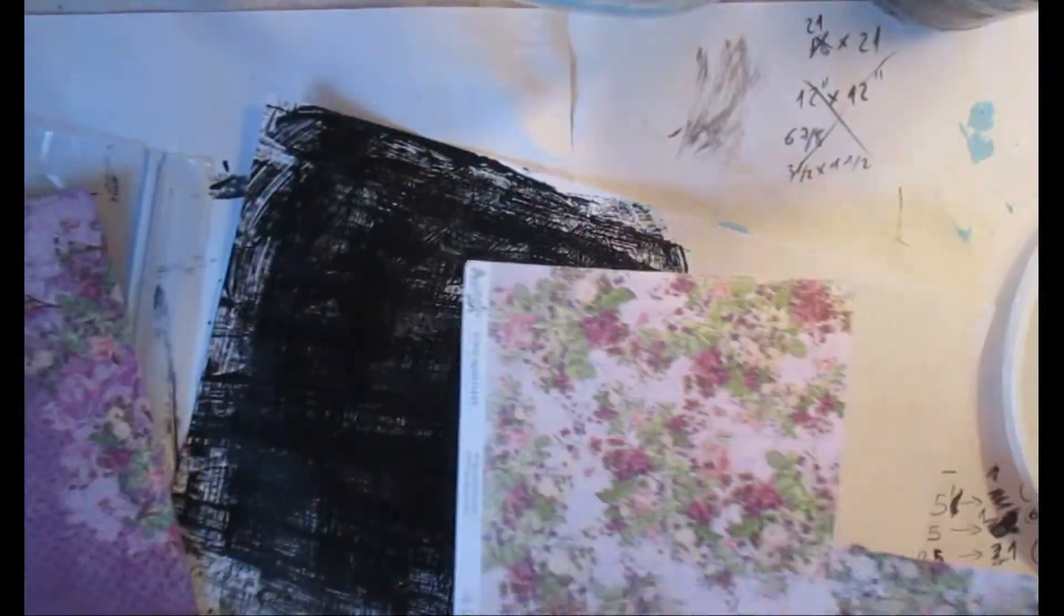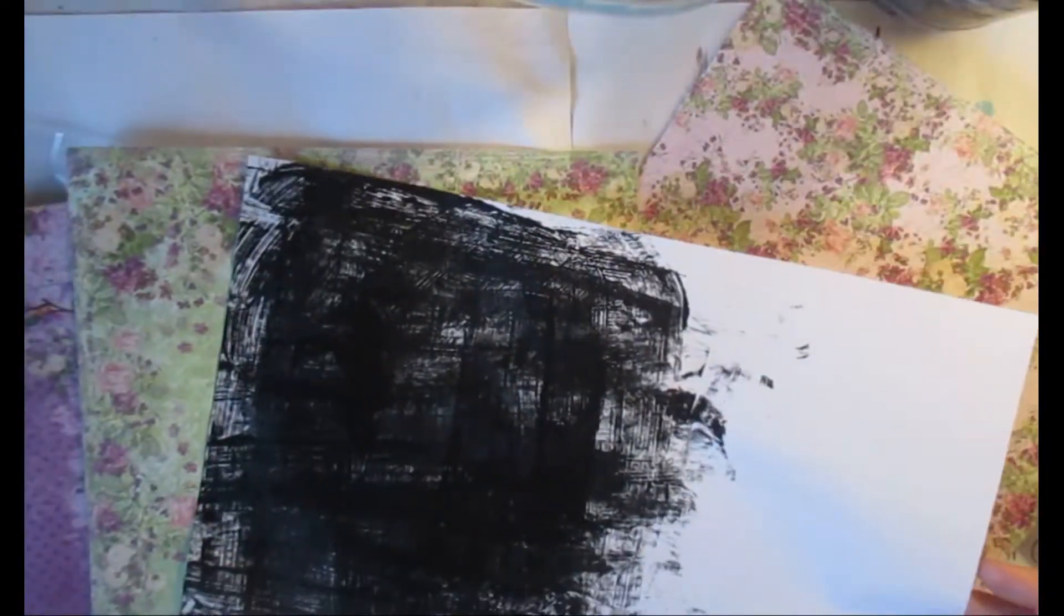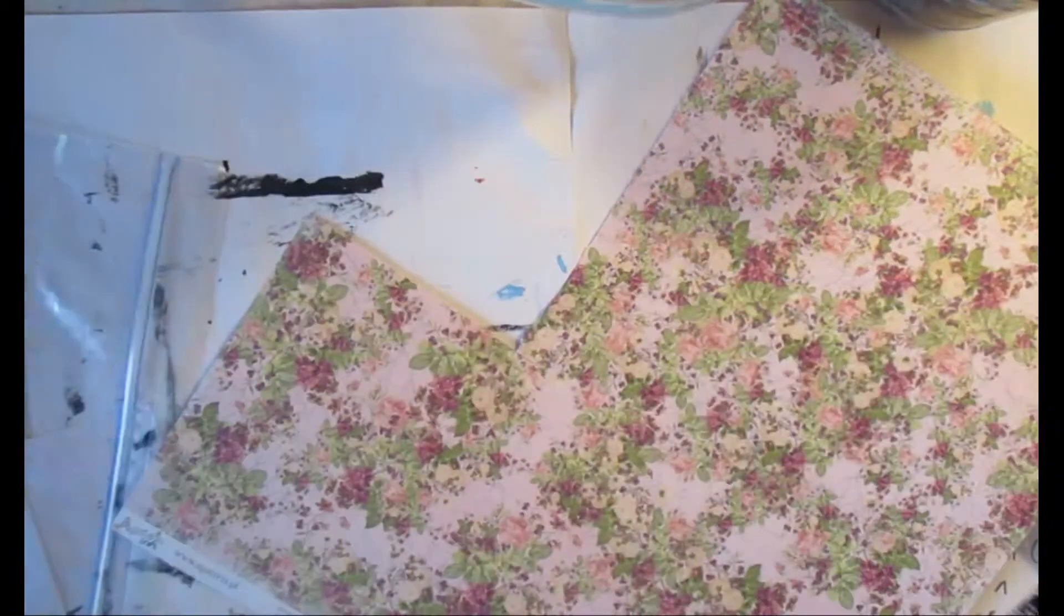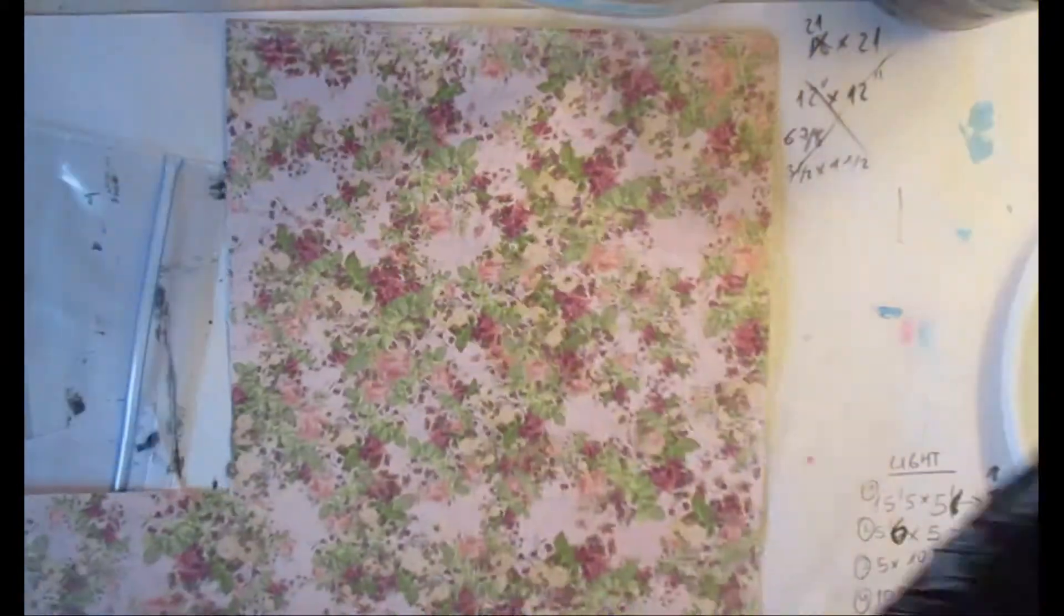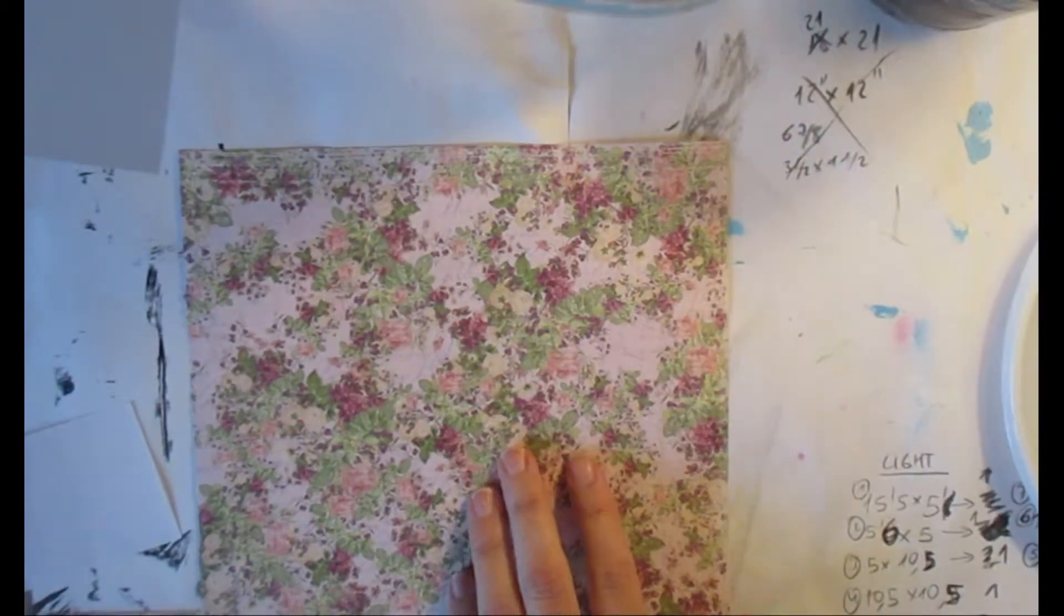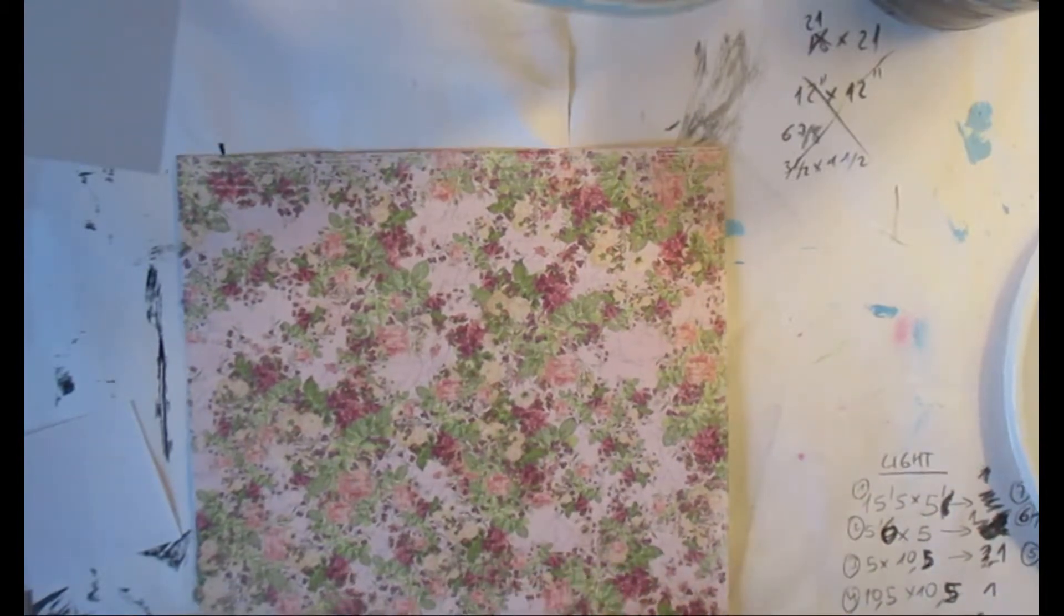As you can see here I am choosing the paper that I will be using - in my case it's a collection of the Agateria collection. Agateria is a Poland brand that I love. I am just choosing the papers, in my case in the end I will be using this floral one, and I am just cutting the seven parts that are the basics for the block.